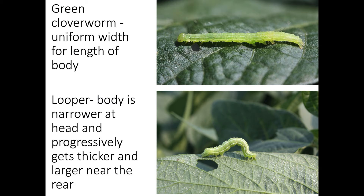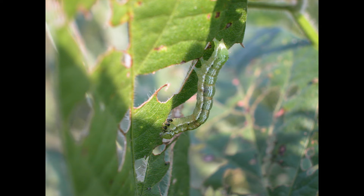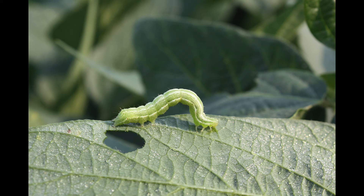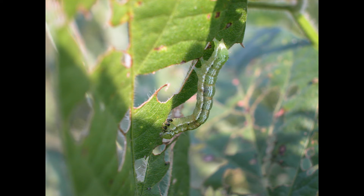Clover worms are about the same size along the length of the body. However, the body of the soybean looper tends to be skinnier at the head and progressively gets thicker and larger near the rear — in other words, it has a skinny head and a big booty. Loopers may reach a length of 1.3 inches long. We also need to distinguish between cabbage loopers and soybean loopers because soybean loopers are considerably more difficult to control. Cabbage loopers will not have any black on their bodies — no spots or black true legs. Soybean loopers may or may not have black on their bodies.